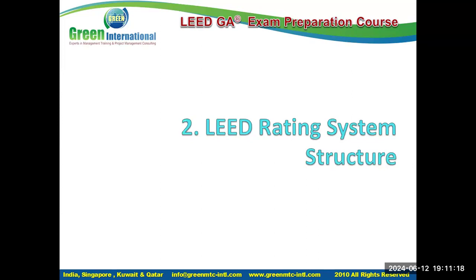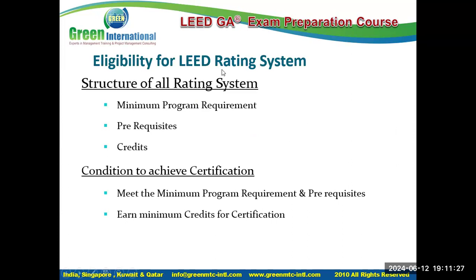The structure of any LEED rating system — whether new construction, home, or any other — consists of three main things: Minimum Program Requirements (MPR), prerequisites, and credits. MPR is eligibility — whether the project is eligible to apply for LEED certification. Once eligible, you register the project, then meet prerequisites in each category, and earn credits above those prerequisites.